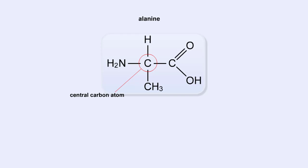Now let's look at the amino group. An amino group is composed of nitrogen and hydrogen. This is the amino group of the amino acid — notice that it has a nitrogen atom. The word amine is a Latin word that refers to any molecule that is similar to ammonia, such as this amino group.